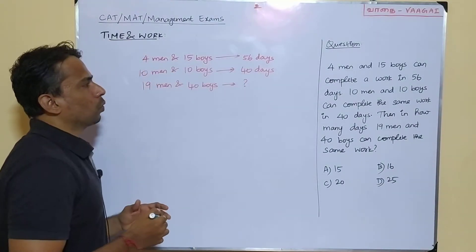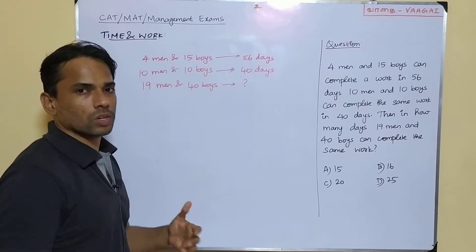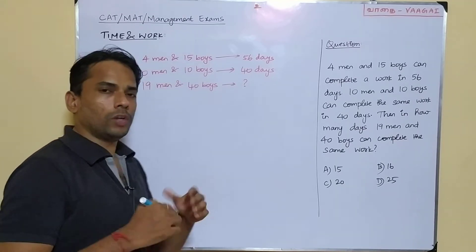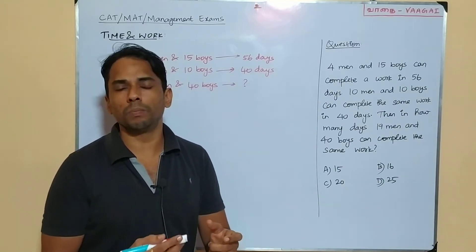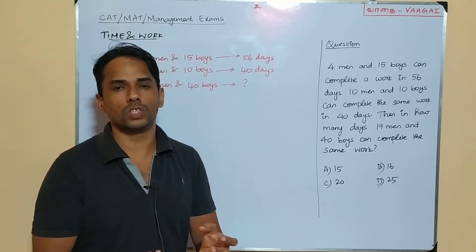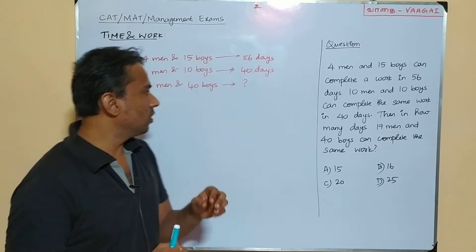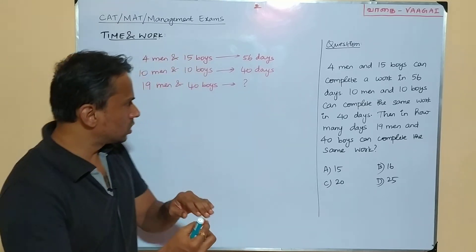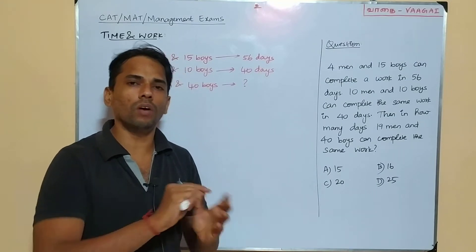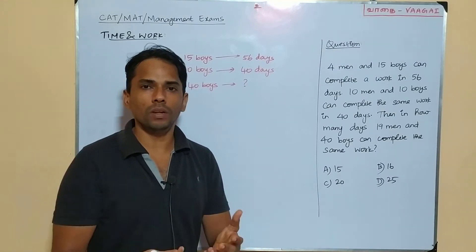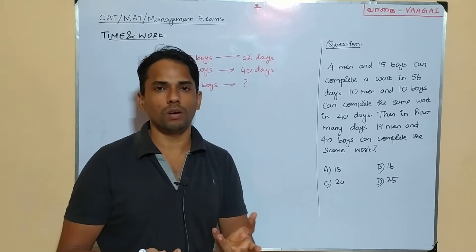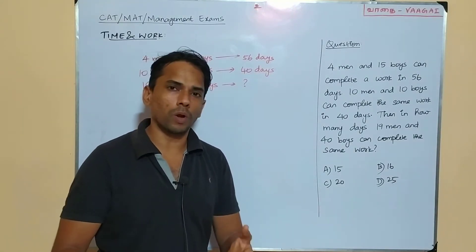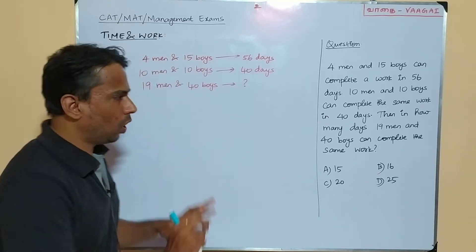These kinds of questions are a little bit confusing for students because they involve both men and boys. The approach to solve this is very simple: we will try to get a relation between their manpowers or efficiencies. We will find the ratio between one man and one boy, and use that relation to convert the entire group to either all men or all boys, making the problem much easier to solve.